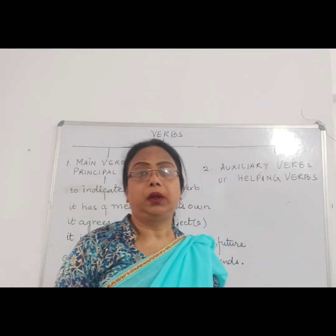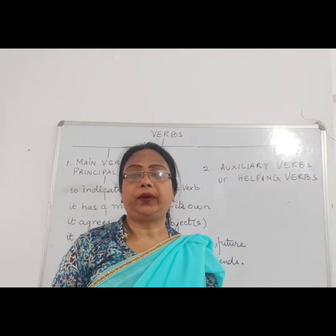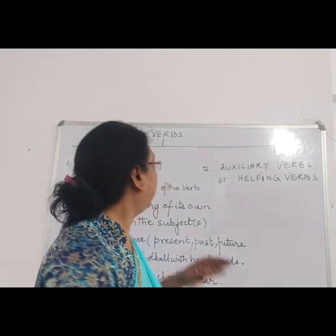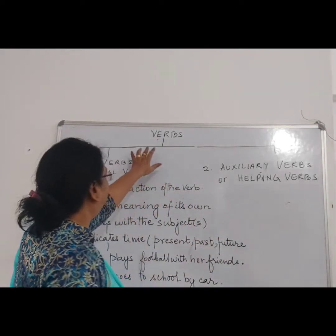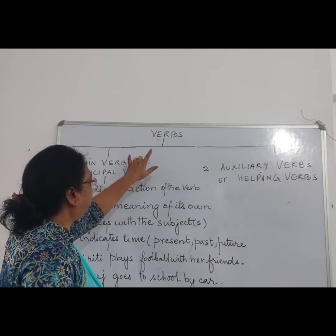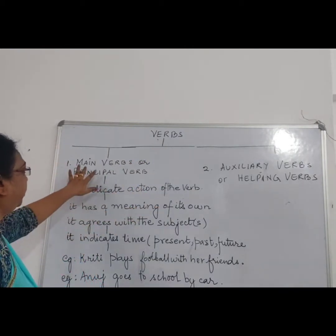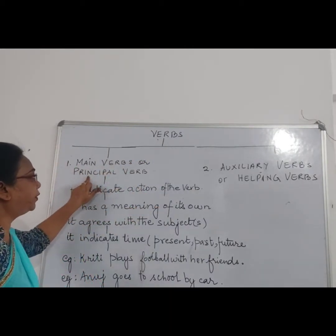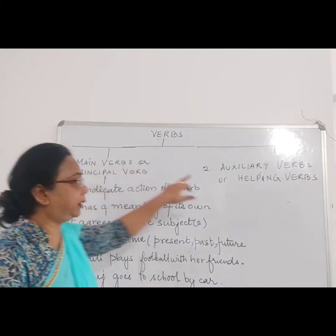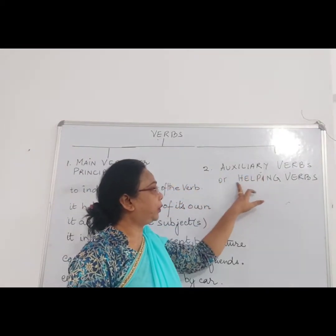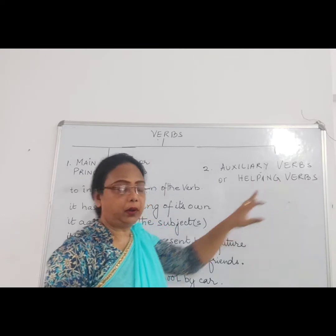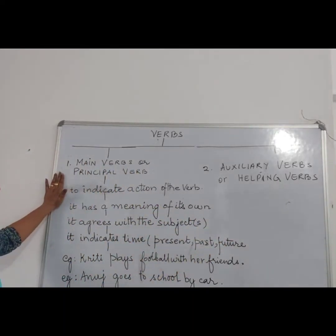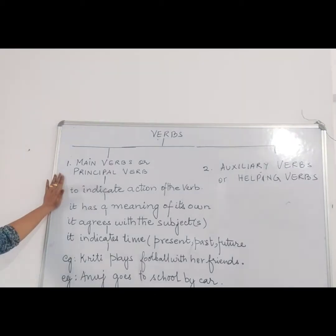Now verb — we will see the kinds of verb. There are two kinds of verb: that is main verb, or you can say principal verb, and the other is auxiliary verb. We will see what the main verb or the principal verb is.